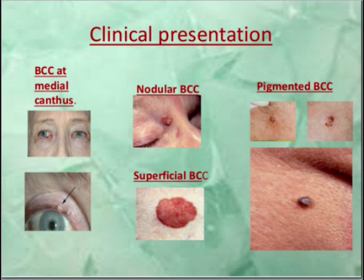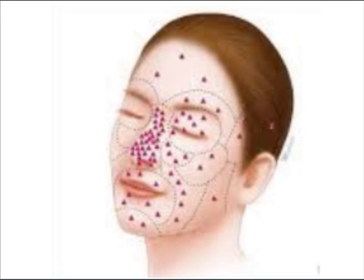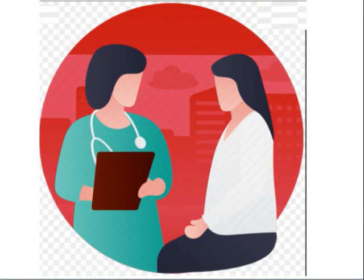Recurrence is common. Different clinical presentations may be present, including medial canthal lesions and lesions on the eyelid. Nodular BCC, superficial BCC, and pigmented BCC may also occur. Here are the areas on the face where basal cell carcinoma is most commonly found — most commonly on the nose, tip of the nose, and medial canthal regions.